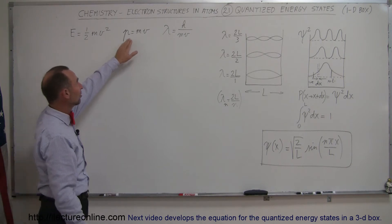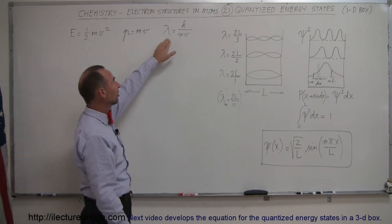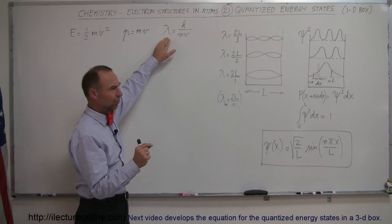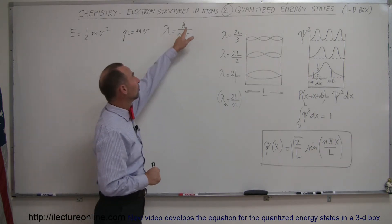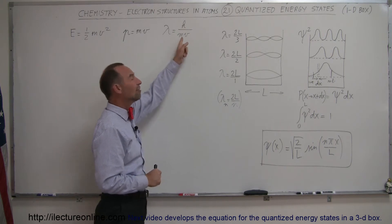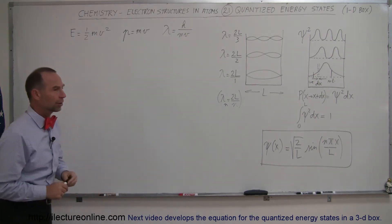We have another equation that says the momentum is equal to mv, and the third equation says that the wavelength of a particle, and yes, particles have wavelengths, and they're very small like electrons, which is equal to Planck's constant divided by mv, which of course is the momentum of that particle.